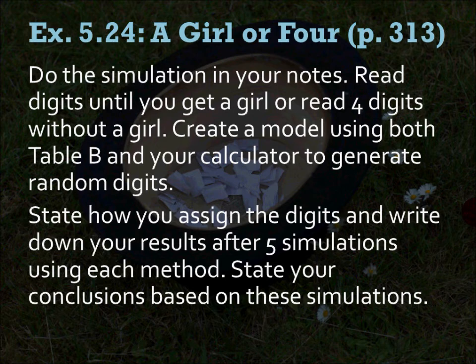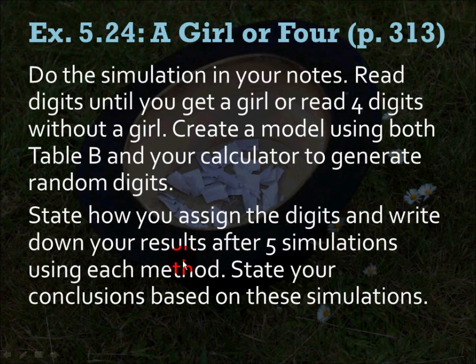Now let's do another simulation: Girl or 4, on page 313. A couple plans to have children until they have a girl or until they have 4 kids, whichever comes first. We will assume each child has a probability of 0.5 of being a girl and 0.5 of being a boy, and the sexes of successive children are independent. Read digits until you get a girl or read 4 digits without a girl. State how you assign the digits and write down your results after doing 5 simulations using each method, then state your conclusions based on these combined 10 simulations.